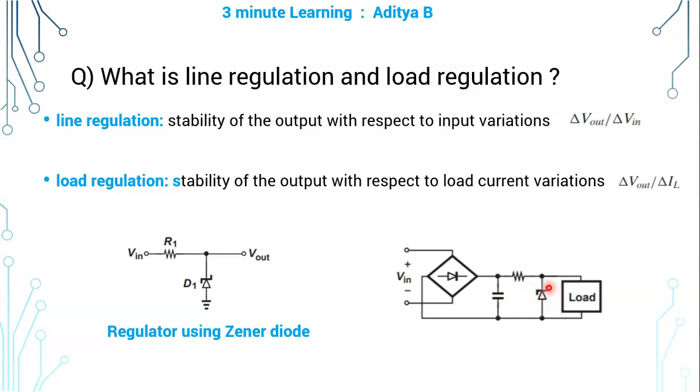This is the Zener diode in reverse bias in the breakdown region which is connected in parallel to load. This is the regulator element. The purpose of this is to minimize the fluctuations in the output voltage which is given to load.